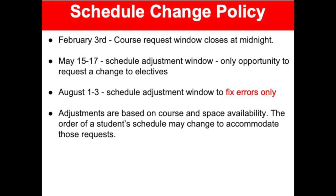As a reminder, the course request window closes at midnight on February 3rd. After that time, each grade level in grades 9-11 will have a 3-day designated window to log back into Skyward through Student Access to put their schedule in their preferred order during online arena scheduling. After that window closes, just before May 15th, we will open the view to Skyward for students to see their unofficial schedule. If they would like to request a change to their electives or the order of their classes, they are welcome to submit a schedule change request form during this window only. Counselors will make those changes as long as there is space available and it meets graduation requirements. After the May 15th through 17th window, the final window to request changes will be for errors only.